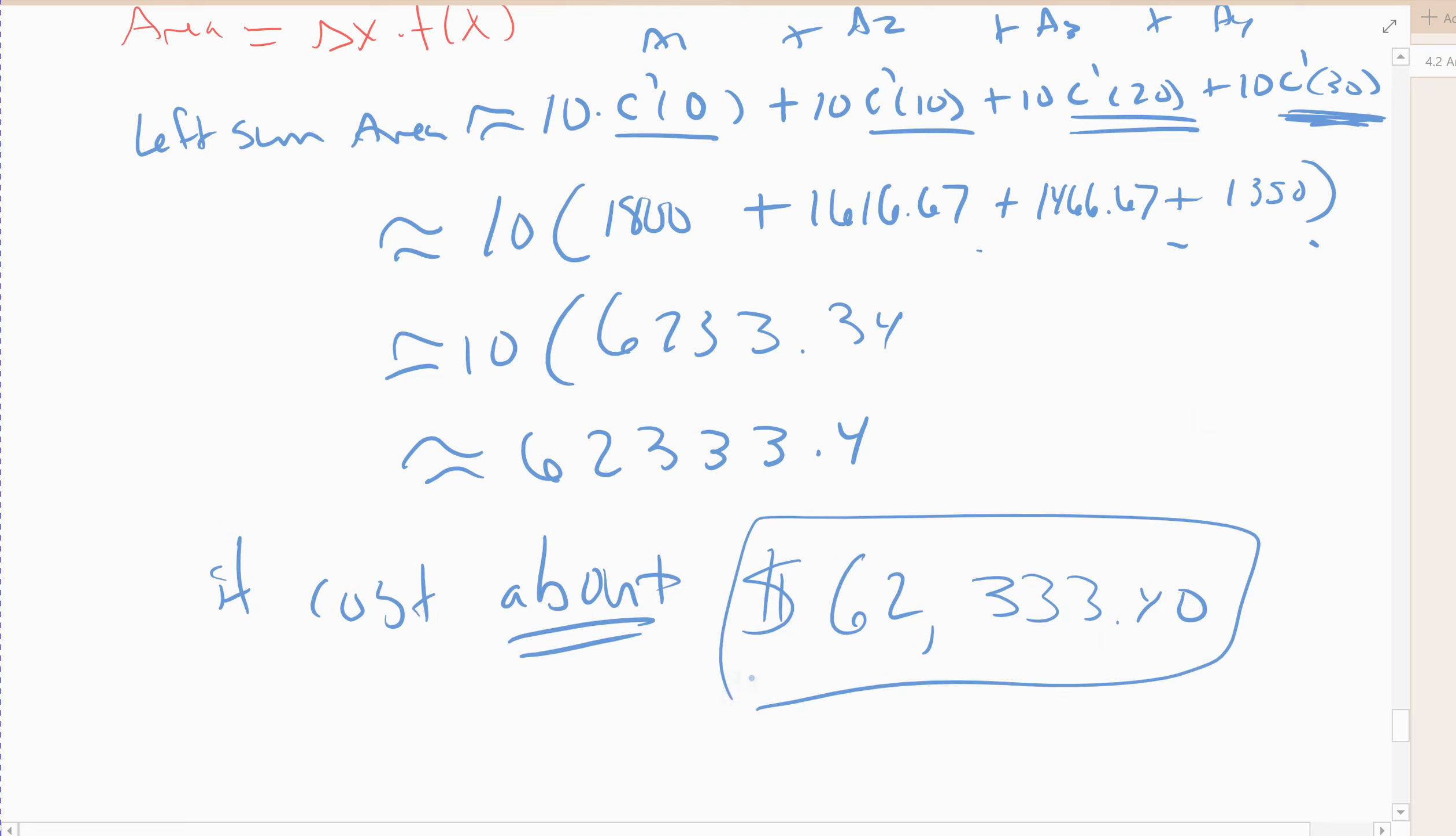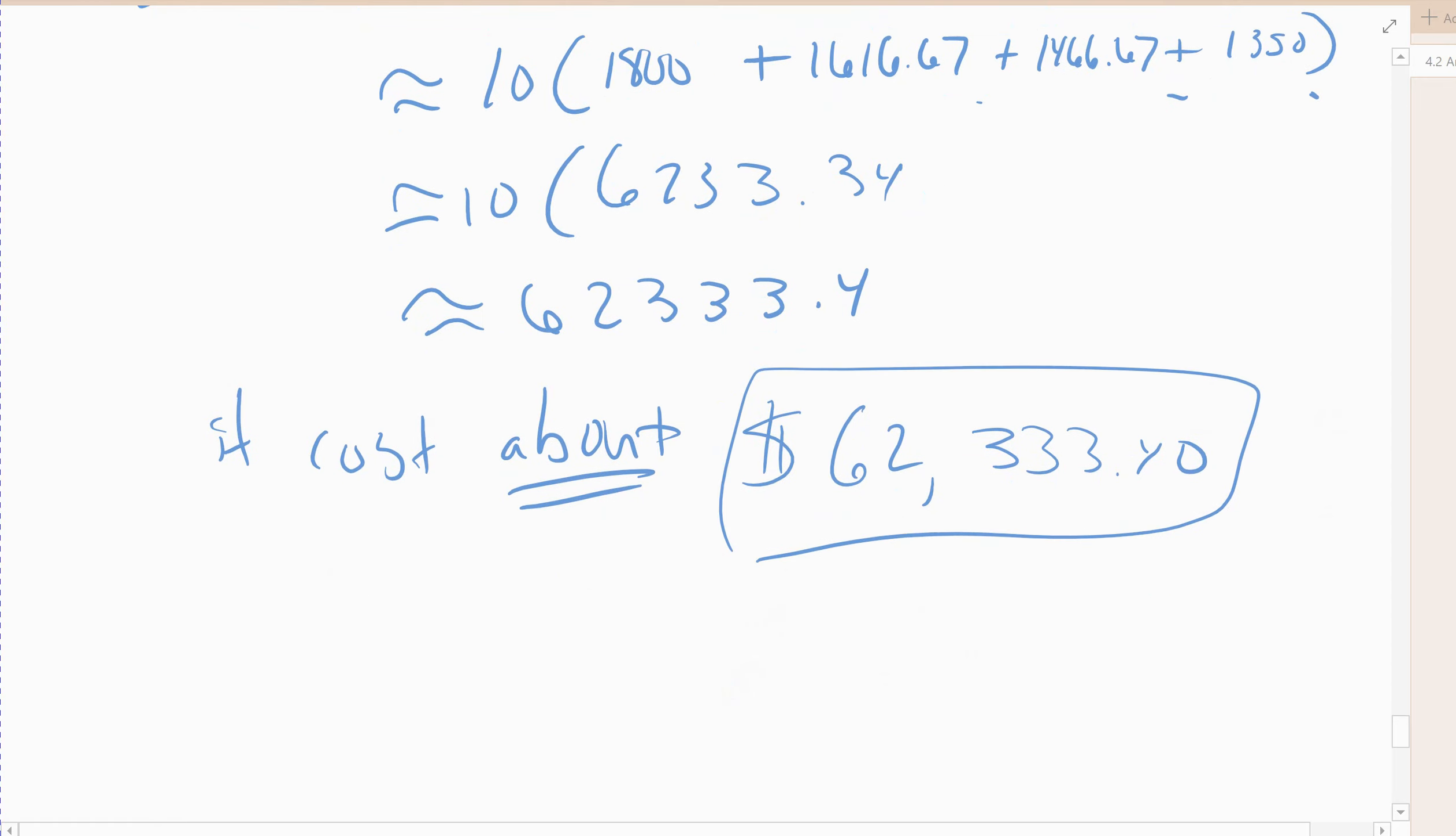Which again, just make sure you pay attention to what the book asks you to round to. Sometimes they ask you to round a different placement. So if they ask me to round to the thousands place, it would be $62,000 would be the approximate cost. Alright, so just make sure you're careful when you're doing these. Read carefully what they want you to round to. Alright, so that's an example of using the left end points.